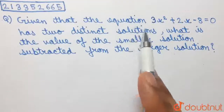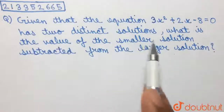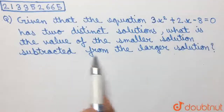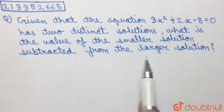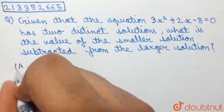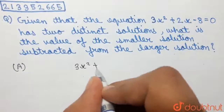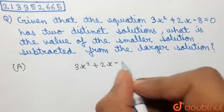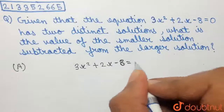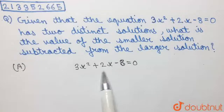Given that the equation 3x squared plus 2x minus 8 equal to 0 has two distinct solutions, what is the value of the smaller solution subtracted from the larger solution? So, a quadratic equation has been given to us in the question, which is 3x squared plus 2x minus 8 equal to 0, and we have been asked to find the value of the smaller solution subtracted from the value of the larger solution.